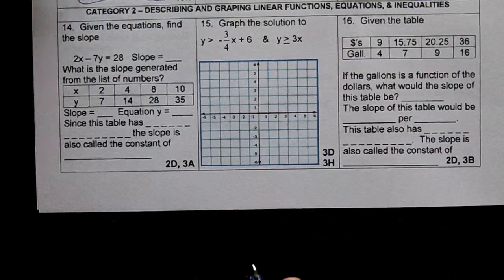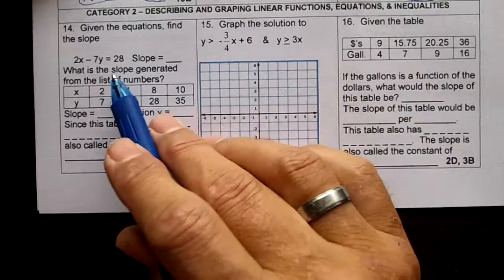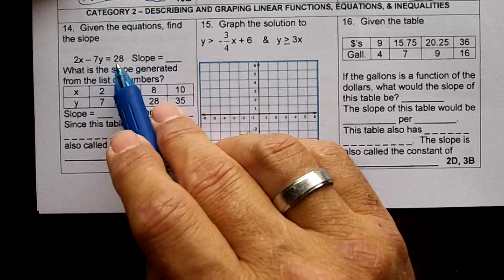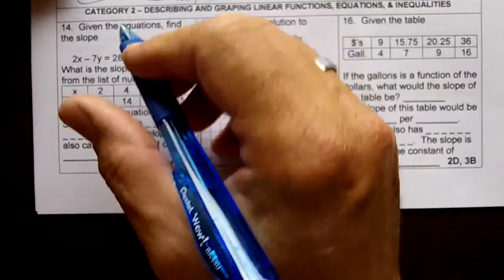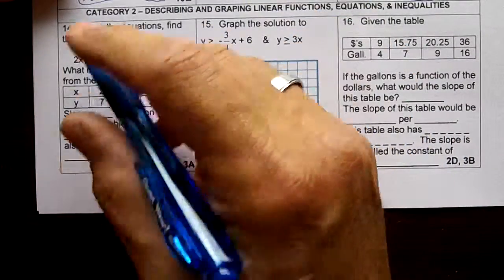Number 14. Given the equations, find the slope. 2x minus 7y equals 28. I need to make this y-intercept form. And there's another way to do this. I'll show you that in a minute.